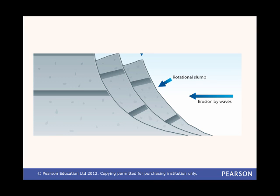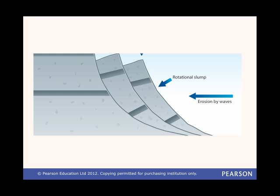Slumping is a second main type of mass movement. This usually happens when erosion has weakened the bottom of a cliff and a section of the cliff face slumps downwards under the effect of gravity. This often happens after a period of heavy rain saturates the soil and permeable rock layers of a cliff, making it heavier. Slumps tend to follow a curved surface like a scoop, so that the new cliff face left behind is not as steep as before.